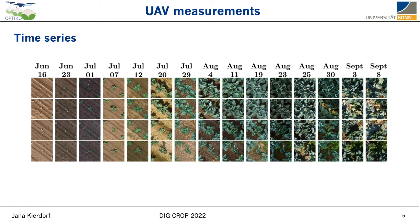We separate our image data into three datasets: our reference plants, defoliated plants, and randomly distributed plants, which do not belong to the other two datasets.